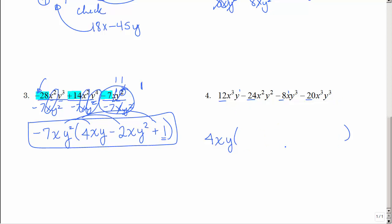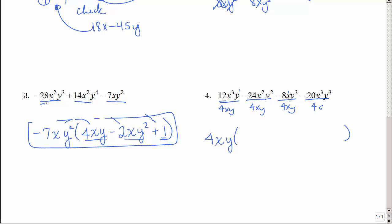So since I have 4 things, I'm going to end up with 4 things in my parenthesis. I started out with 3 terms, so I end up with 3 terms inside my parenthesis on number 3. So on number 4, I should also end up with 4 things in my parenthesis. So I'm going to divide both of these by 4xy. So 4 goes into 12 three times. The x is reduced to x squared. And y goes into y one time.